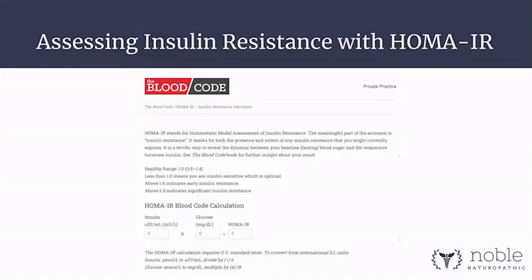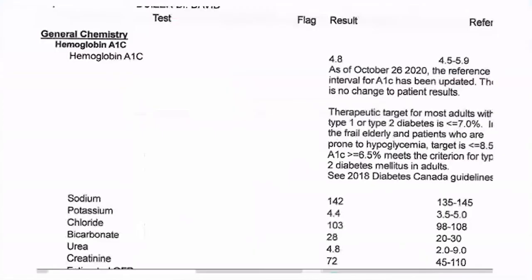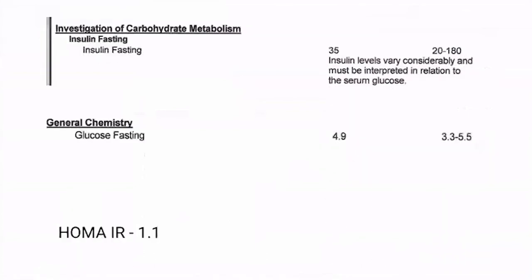When it comes across your desk, it's going to look like this. See at the top where it says insulin fasting. Labs will typically report: insulin levels vary considerably and must be interpreted in relation to the serum glucose. The fasting glucose is always reported at the exact same time as fasting insulin. Even if it's the same number of hours of fasting, it's not going to be exactly the same every time you test it — it's a variable test. But for our purposes it is close enough to get the point across and teach that being insulin sensitive is incredibly important.